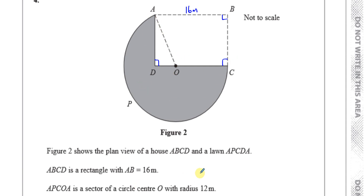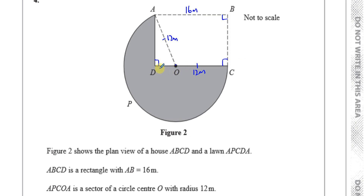The lawn APCDA is a sector of a circle with radius 12. So O to C is 12 meters, and O to A will also be 12 meters. That's a sector from O through A, P, C, back to O, with radius 12. So since the total is 16 and OC is 12, OD must be 4 meters.